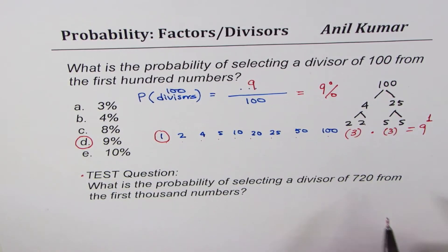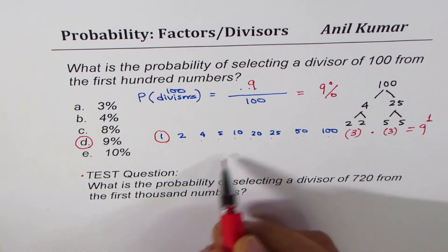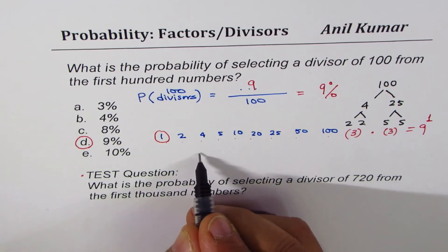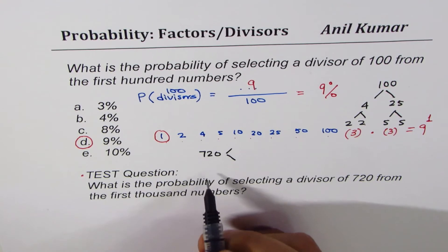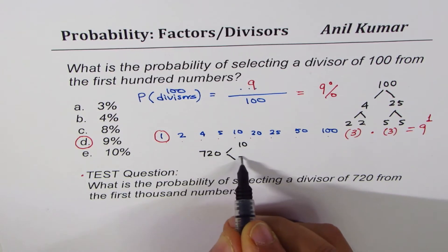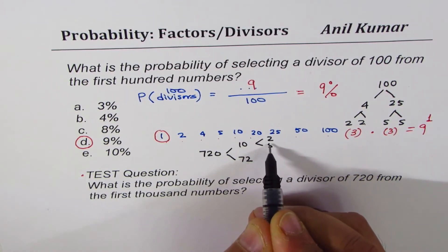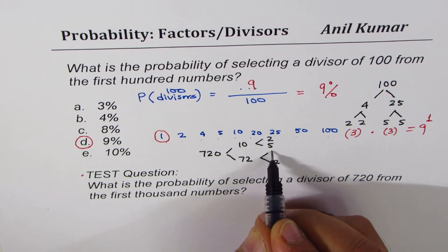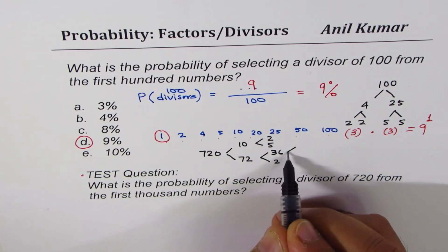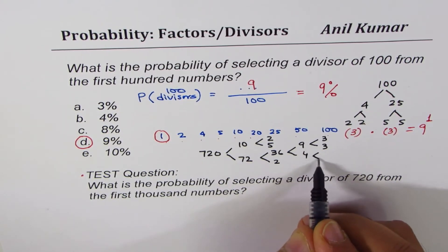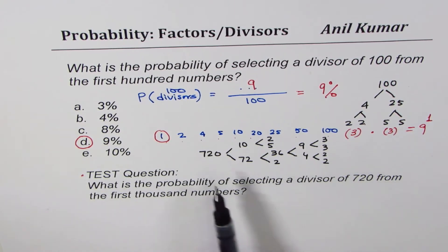For 720, do prime factorization. Starting with 10 × 72: 10 gives us 2 and 5 as prime factors. 72 breaks into 2 × 36, then 36 is 9 × 4, where 9 is 3 × 3 and 4 is 2 × 2. That gives us a lot of prime factors.